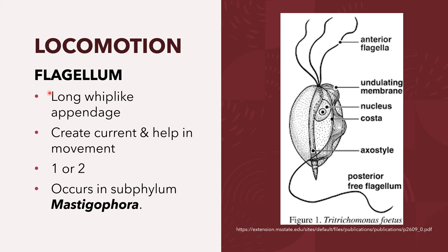This type of flagella occurs in the subphylum Mastigophora. The diagram shows the representative flagellate protozoa Tritrichomonas fetus, a flagellated protozoan of the reproductive tract of cattle. This species has three anterior flagella, an undulating membrane, and a trailing posterior flagellum.